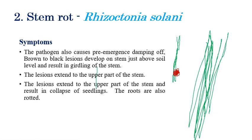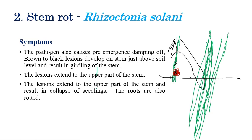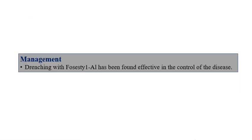The small spots extend in the upward direction, starting just above the soil level. Later stages, these lesions extend upward, and other stem portions also get affected. In later stages, the entire plant collapses and the roots also get rotted. Application of fosetyl-aluminium is very effective against this disease.